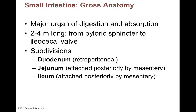In this video, we're going to look at the small intestine. If we're looking at the gross anatomy — gross just means large anatomy — the small intestine is the major organ of digestion and absorption. It's where most of your absorption occurs, so you can't live without it. Disorders like Crohn's disease or inflammatory bowel disease affect your ability to absorb, which can lead to malnutrition.